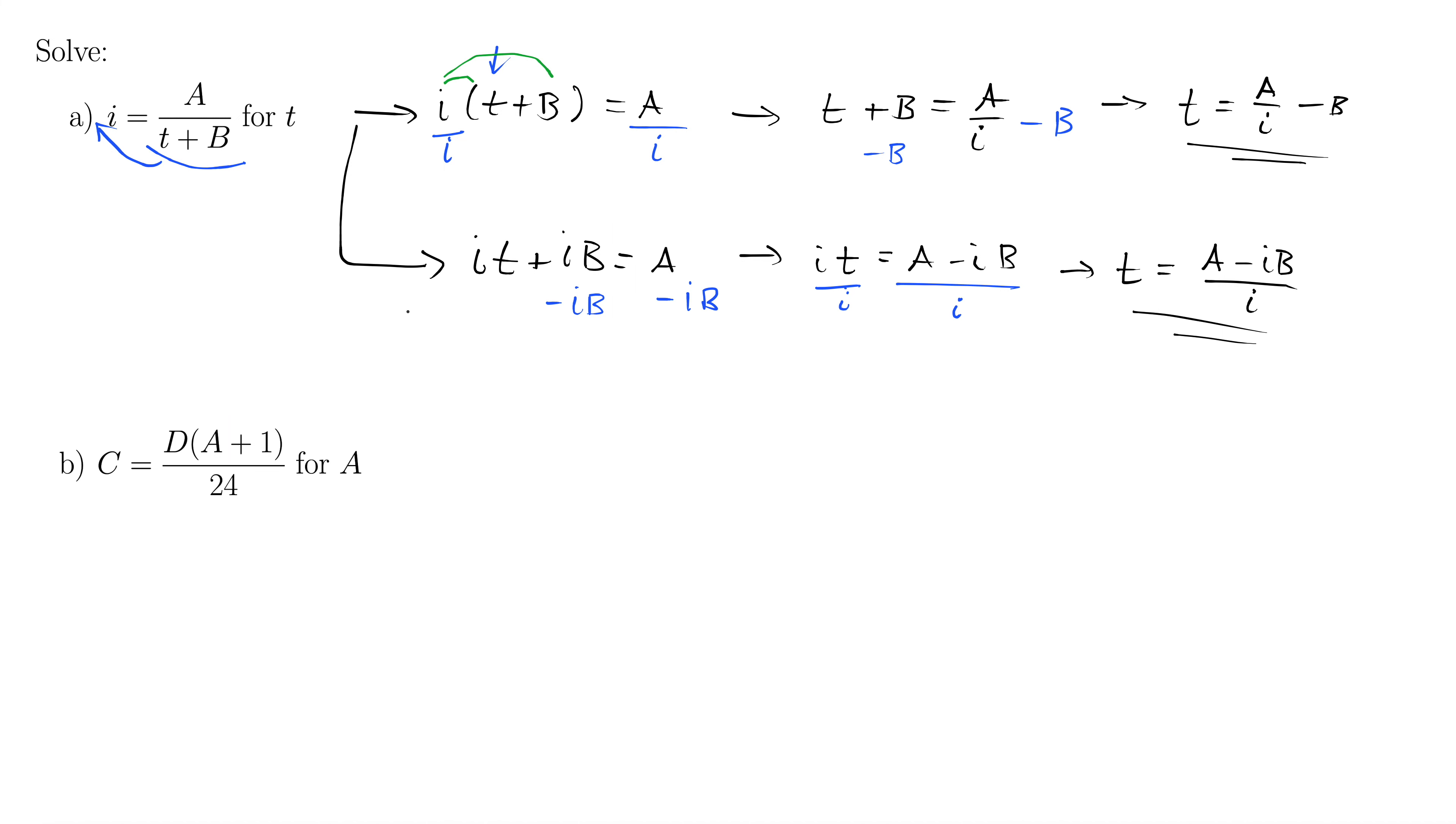Let's try part b. Here we have C equals, up on top, D times the quantity A plus 1, all of that divided by 24. And here we're solving this for A. So you always have to check which variable you're solving for. Don't get overwhelmed. Don't get lost in the variables. Just treat them like they're just numbers. First thing we do, multiply up with this 24. When you just have one term equals a single fraction like that, or a single rational expression, just multiply it by the denominator. So we have 24C equals D quantity A plus 1.